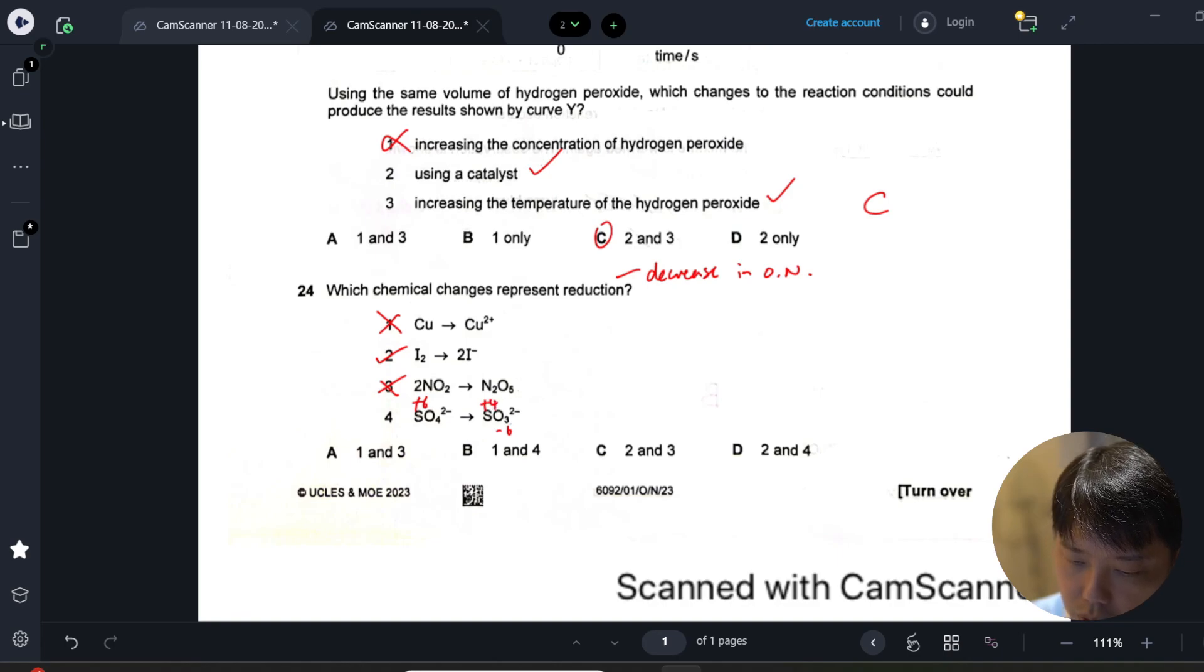So plus six to plus four, yes, is a reduction. Two and four is correct. Our answer is D.